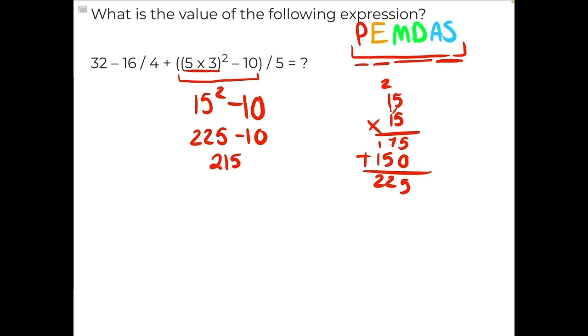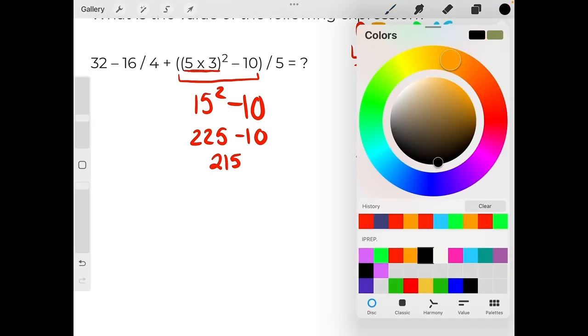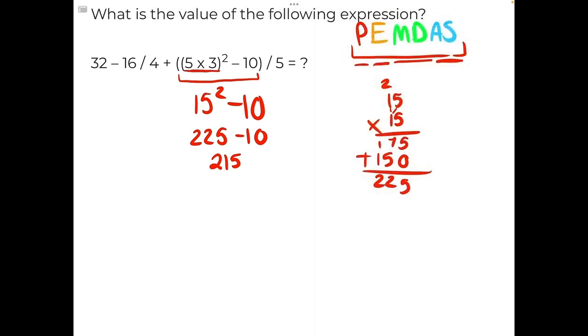And now we can rewrite the entire expression since we have resolved this set of parentheses: 32 minus 16 divided by 4 plus 215 divided by 5, because this entire set of parentheses was being divided by 5, and 215 is the result of those parentheses. So we have completed the parentheses.